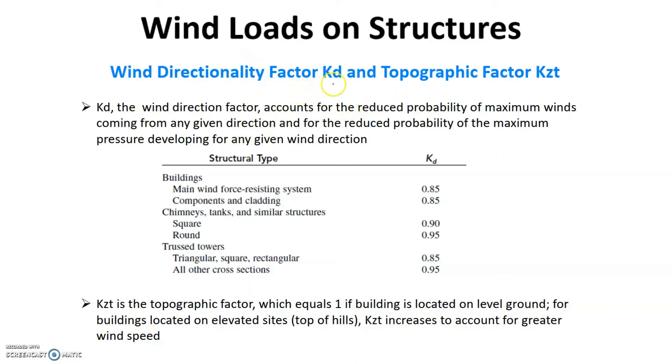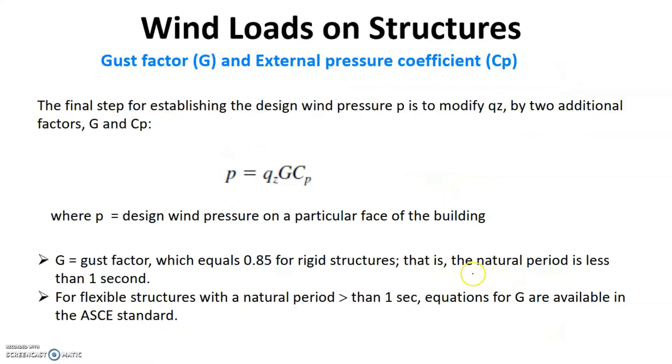The next important factor is the wind directionality factor KD and the topographic factor KZT. KD is chosen from this table which classifies the types of structures and the corresponding values. KZT is the topographic factor which equals 1 if your structure is on level ground. However, if the slope of the ground is other than 0, we have to refer to the manual to get the value of KZT.